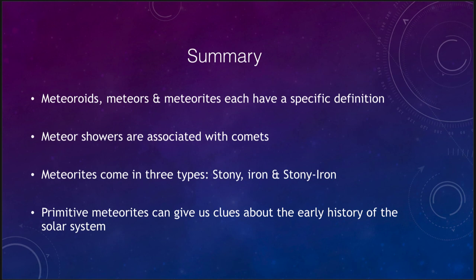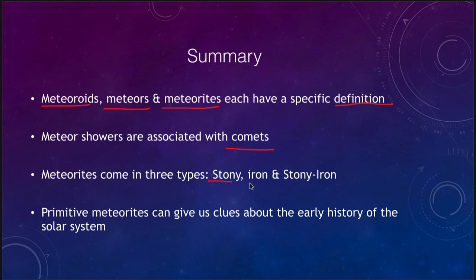To summarize: we have three different types of objects — meteoroids, meteors, and meteorites — each with a very specific definition and meaning. Meteor showers are associated with comets. There are three types of meteorites: the stony, the iron, and the stony-iron. And finally, primitive meteorites are ones we like to study because they give us clues about the early history of the solar system. That concludes our lecture on meteors and meteorites. We'll be back again next time for another topic in astronomy. Have a great day everyone.